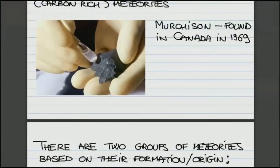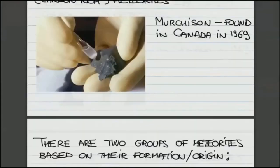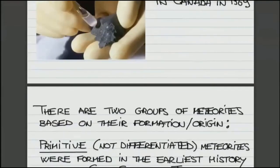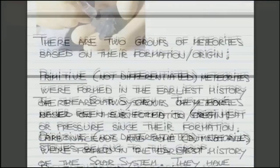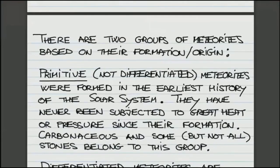Another way to look at them is to classify them based on how they were formed, that is based on their origin, and one group are so-called primitive or not differentiated meteorites. They were formed in the very early history of the solar system and they have not been subjected to high temperatures or high pressures during their lifetime.